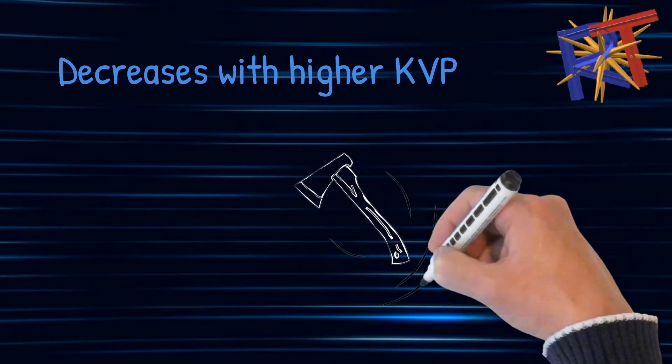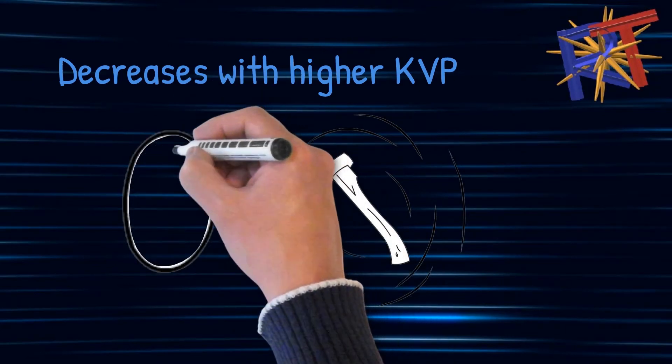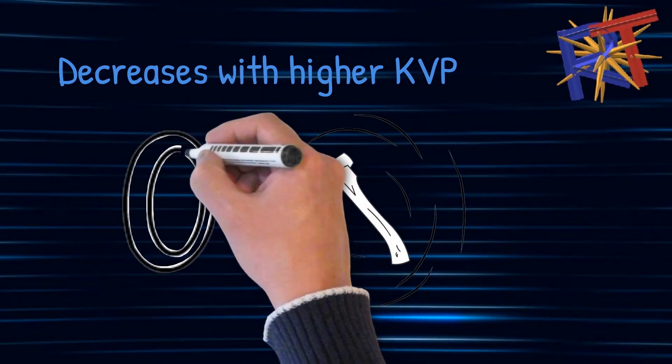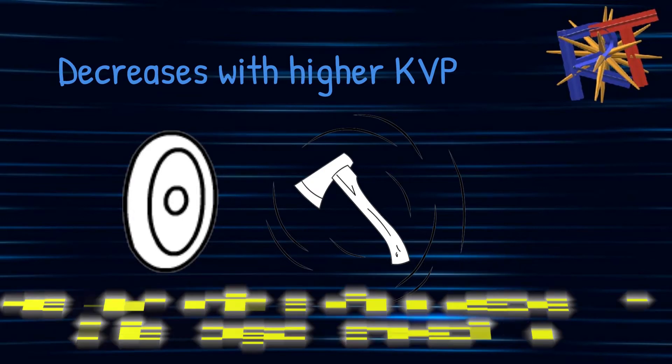It's also important because this is the main source for the patient's dose. This is why it's important when a patient gets a radiography exam they are informed that they will get some kind of radiation dose. Again, we're supposed to use an optimal amount of kvp when we're x-raying our patients.